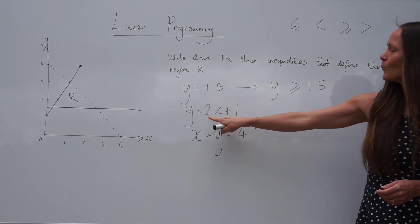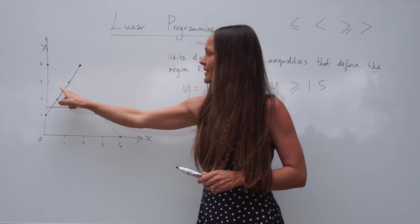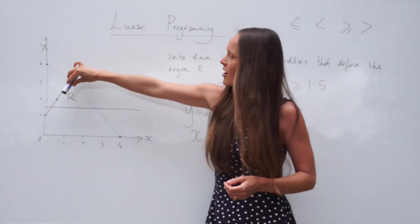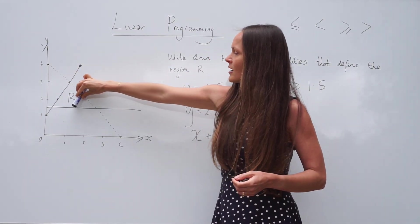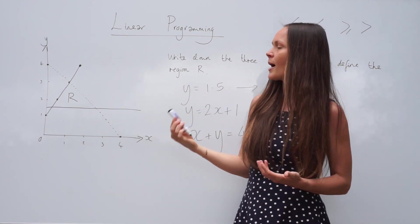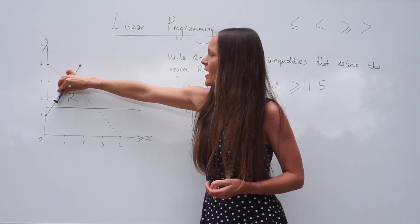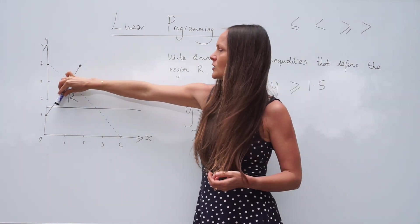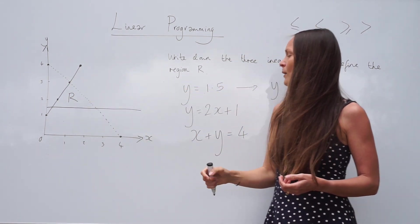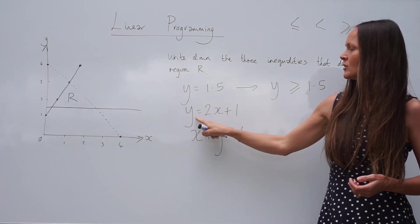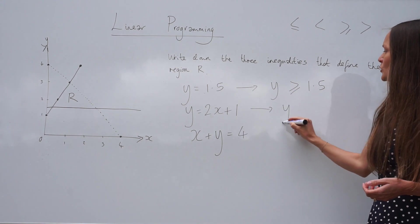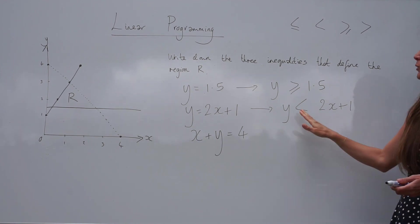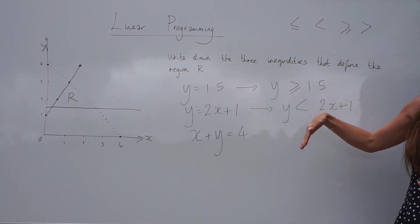On to the next one. So y equals 2x plus 1 is this straight line here. Firstly, let's just look at this in a logical way. The region R is below this line. Now, if you think about what happens to the coordinates, the values as we look below that line. Can you see the x values would be increasing and the y values would be decreasing? So that would mean this side of the equation, the y side would be smaller than the 2x plus 1 side. Because all the y values are smaller than the x values.